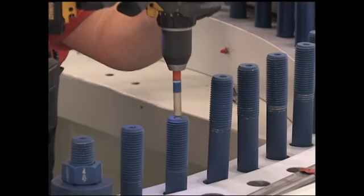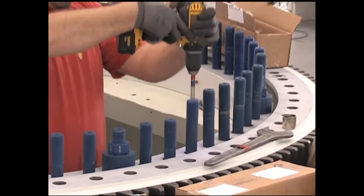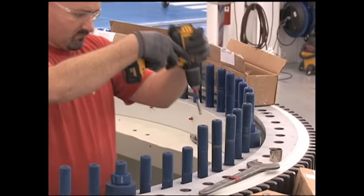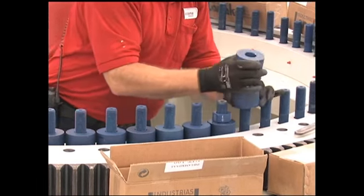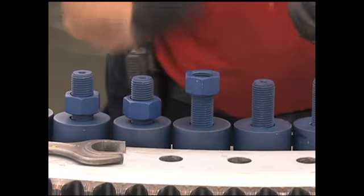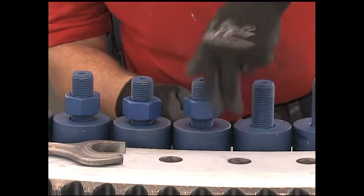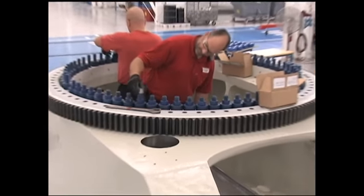The remaining studs are inserted and run down. Spacers are added. Then nuts are installed and checked with a gauge to be sure that enough threads are exposed for tensioning.